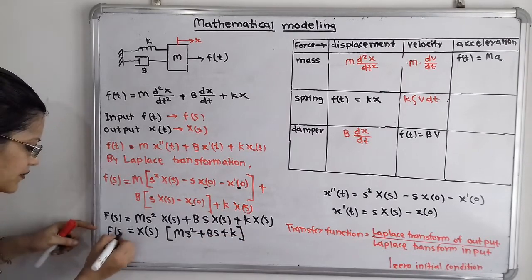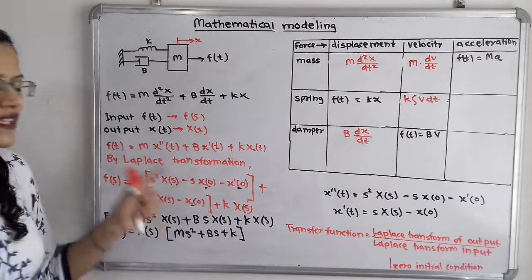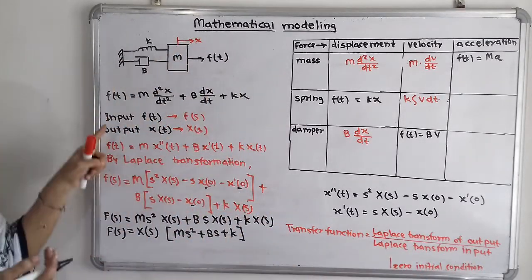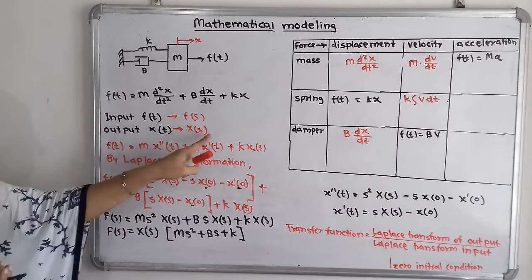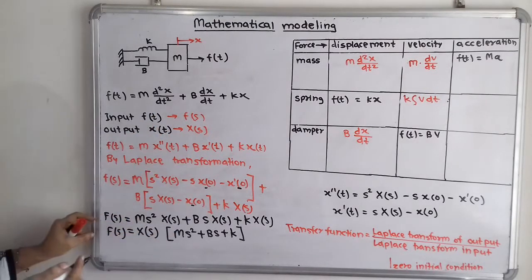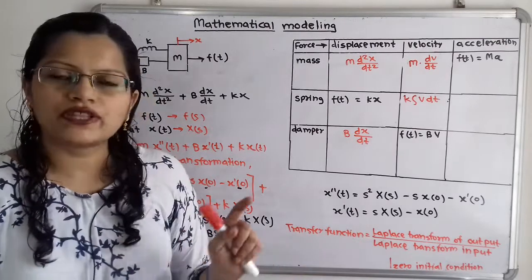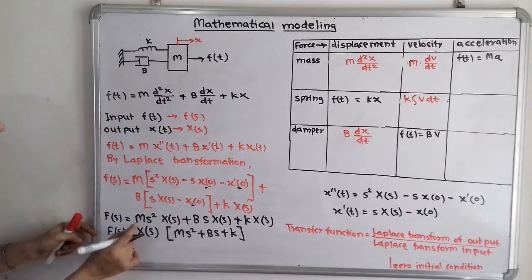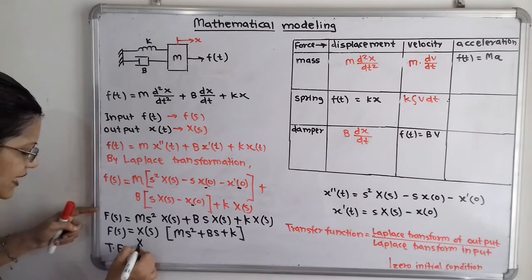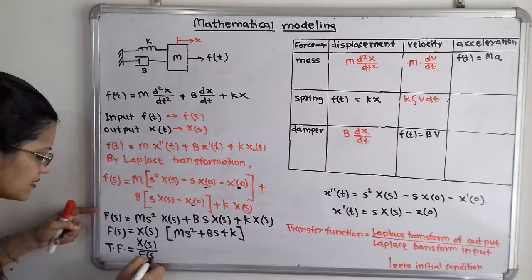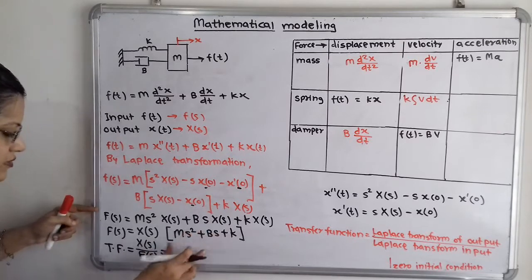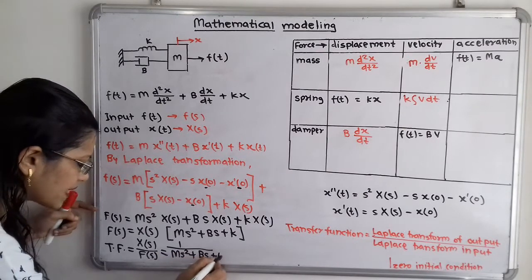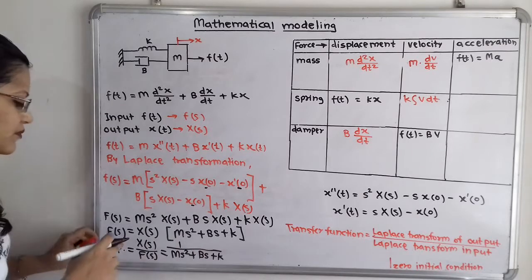Now, what is the transfer function? It is the ratio of output to input, so output is X(s) and input is F(s). Therefore, the transfer function TF = X(s) / F(s) = 1 / (m·s² + b·s + k). This is the final answer for this question.